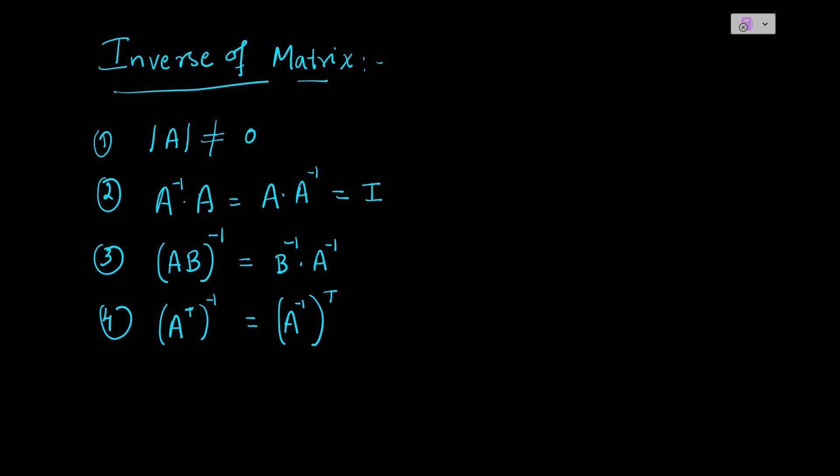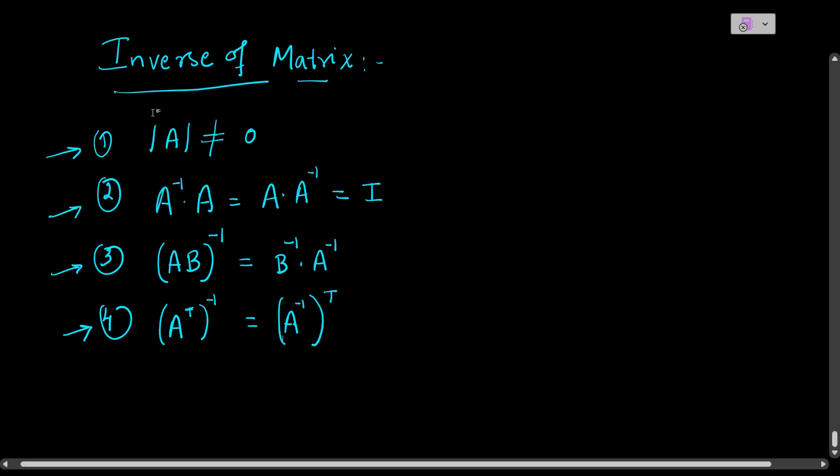So to summarize: point one, determinant of A should not equal 0 for the inverse to exist. Point two, A inverse times A equals A times A inverse equals the identity matrix. Point three, (AB)⁻¹ = B⁻¹A⁻¹. Point four, (Aᵀ)⁻¹ = (A⁻¹)ᵀ. Now let us verify all these using a 2×2 matrix.